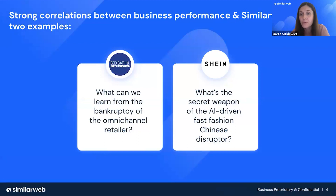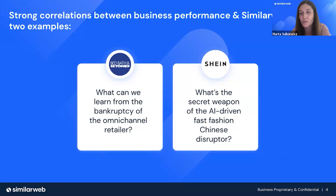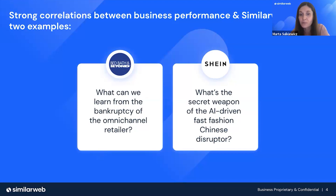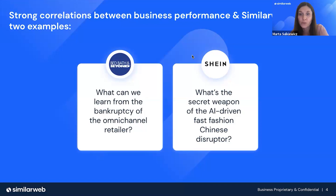On today's webinar, we will focus on examples from the retail industry, showing two totally different stories. First is Bed Bath & Beyond — the spectacular bankruptcy from April, with some news and episodes from the last couple of weeks, including Overstock buying the intellectual property and digital assets of Bed Bath & Beyond. On the other hand, we will present a Shein story: quite controversial, but a very impressive growth path — a Chinese disruptor of the fast fashion market, very heavily AI-driven. We will go under the skin of their strategy and show how our data can prove they're going in the right direction.